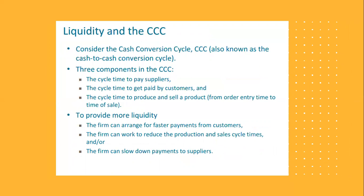In the first supply chain finance lecture, I talked about the cash conversion cycle, also known as the cash-to-cash conversion cycle. In general there are three components. The first is the cycle time in days to pay your suppliers — how many days do you have to pay your suppliers for whatever you've bought from them? The second component is the cycle time to get paid by customers. The time you pay your suppliers, you want that to be as long as possible. The cycle time when customers pay you, you want this to be as quick as possible.